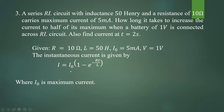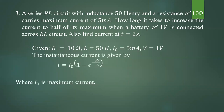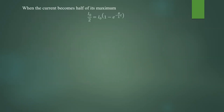What is the maximum current? Maximum current I0 is given by V by R. So when the current becomes half of its maximum, what is the expression? When this current I becomes I0 by 2, the expression becomes: I0 by 2 equal to I0 into 1 minus e to the power minus R by L into T. So current becomes half of the maximum, that is I0 into 1 minus e to the power minus R by L into T.